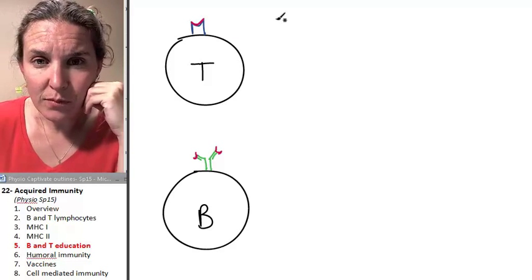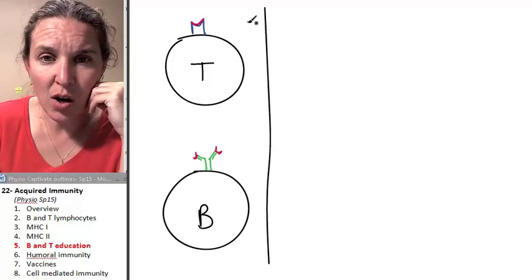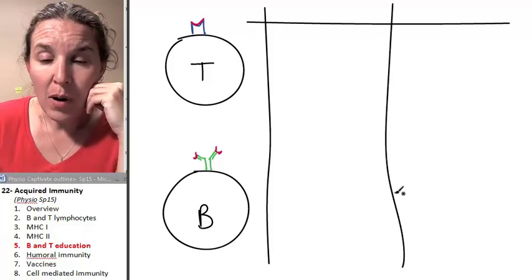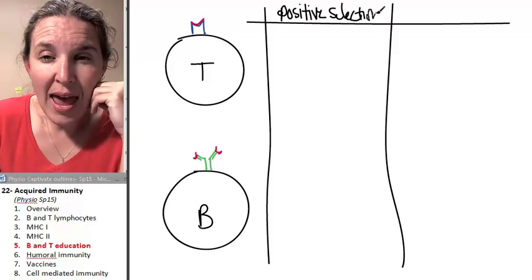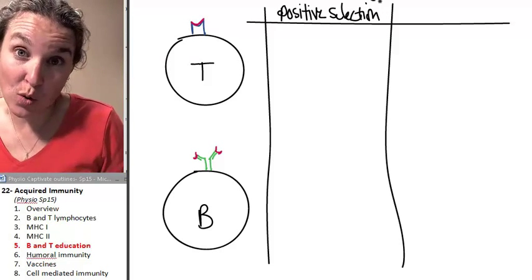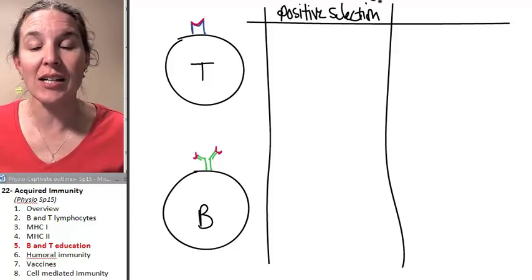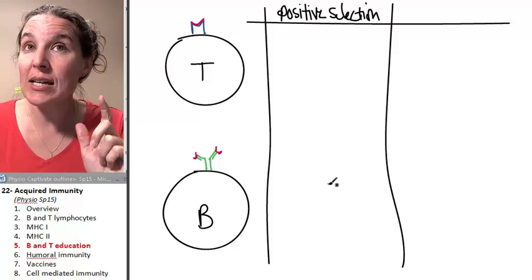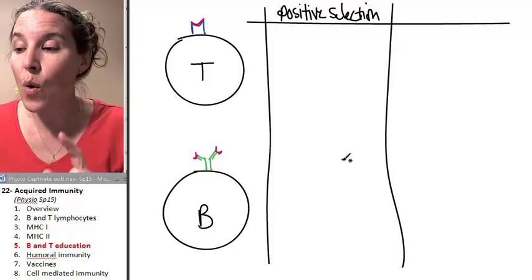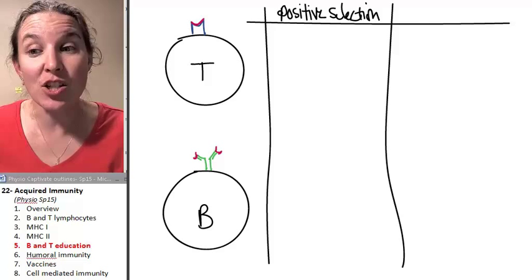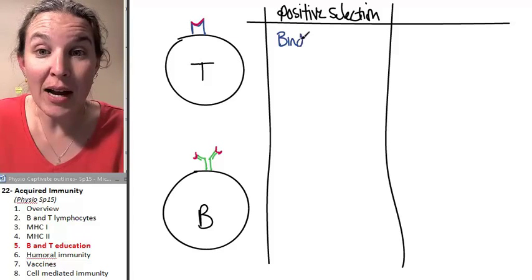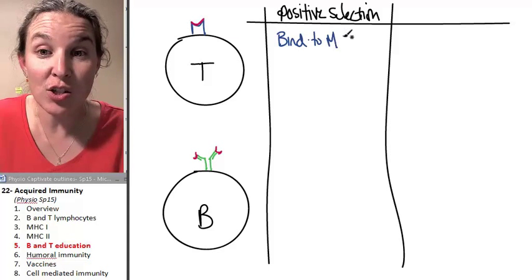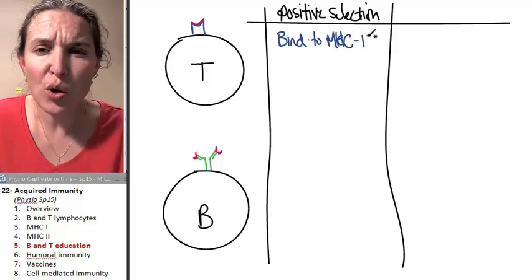One class, it's called positive selection, and when they go to positive selection school or class, when they go to their positive selection class, this class is to test whether or not they can bind to MHC-II. So the question is, are you capable of binding to MHC-II? Who had MHC-II?